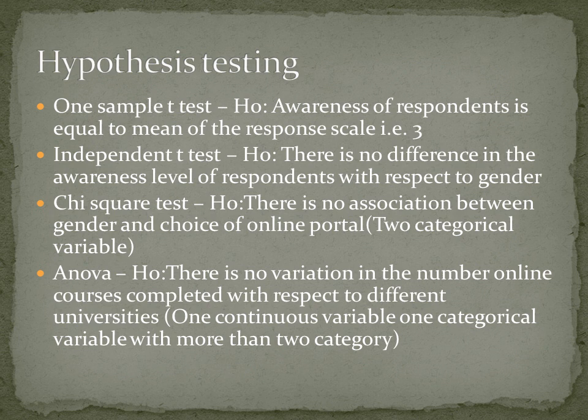For an independent t-test, the null hypothesis is: there is no difference in the awareness level of respondents with respect to gender. You can compare the awareness score difference with respect to gender — whether there is any difference between male and female students' awareness levels. You can also use a chi-square test with null hypothesis: there is no association between gender and choice of online portals — two categorical variables.